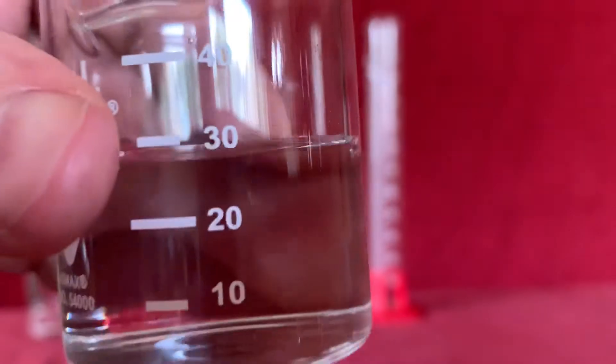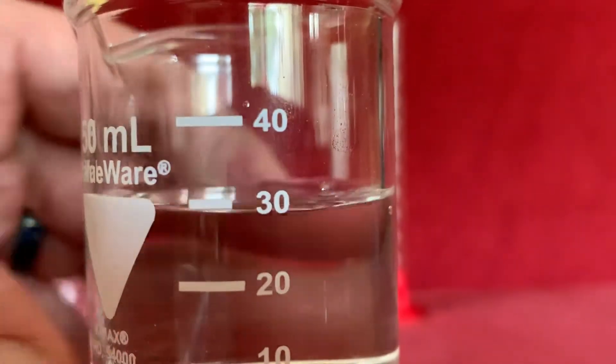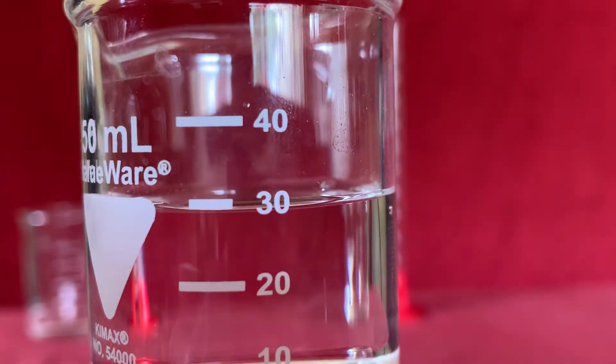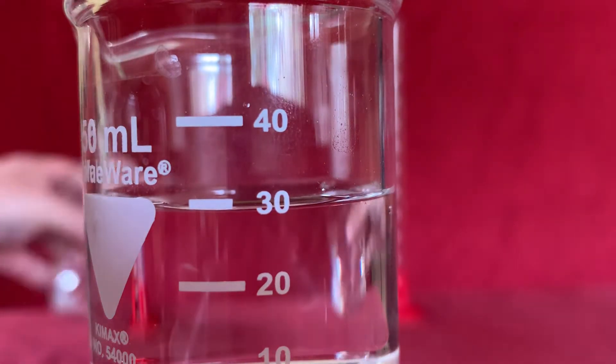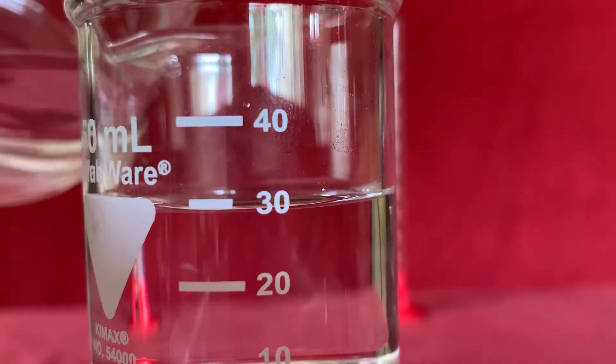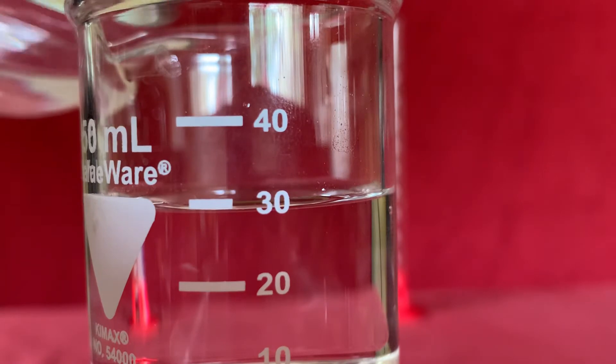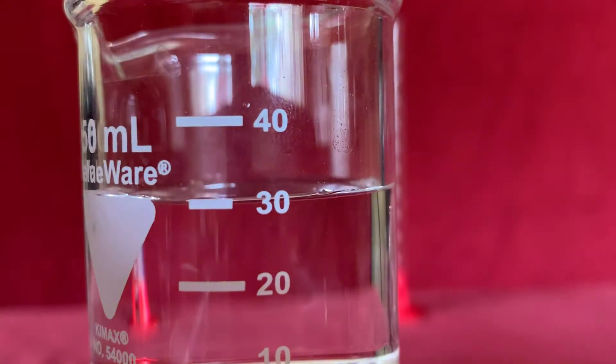Let's take a look at how we've done. It's a little low. Let's add just a little more. There we are. We can see the bottom of the meniscus right on that 30 milliliter mark.